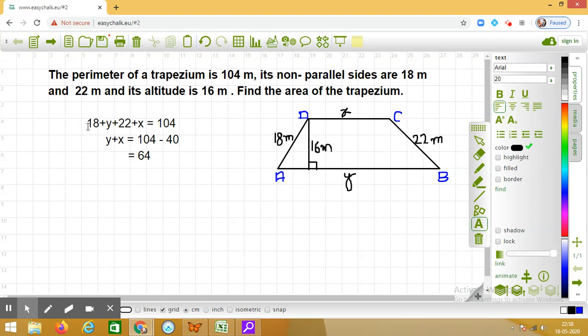That means sum of the parallel sides is 64. Now we are going to write the formula for area of trapezium. We will be using half into sum of the parallel sides—I am putting the values—64 into the distance between them, that is 16.